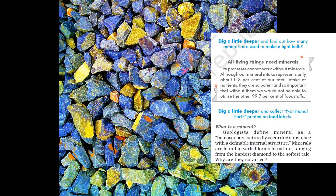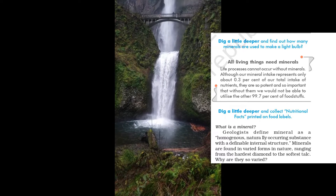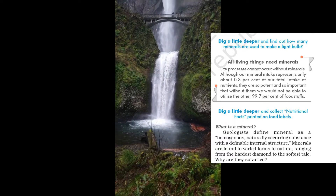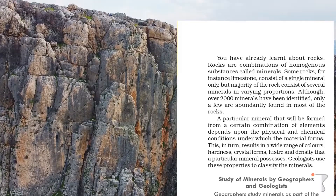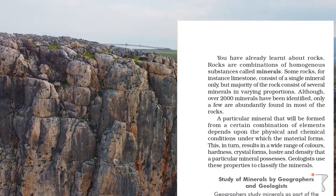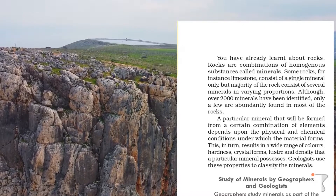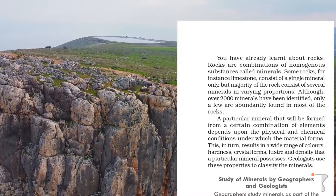What is a mineral? Geologists define a mineral as a homogenous, naturally occurring substance with a definable internal structure. Minerals are found in varied forms in nature, ranging from the hardest diamond to the softest talc. You have already learnt about rocks. Rocks are combinations of homogenous substances called minerals. Some rocks, for instance limestone, consist of a single mineral only, but the majority of rocks consist of several minerals in varying proportions.